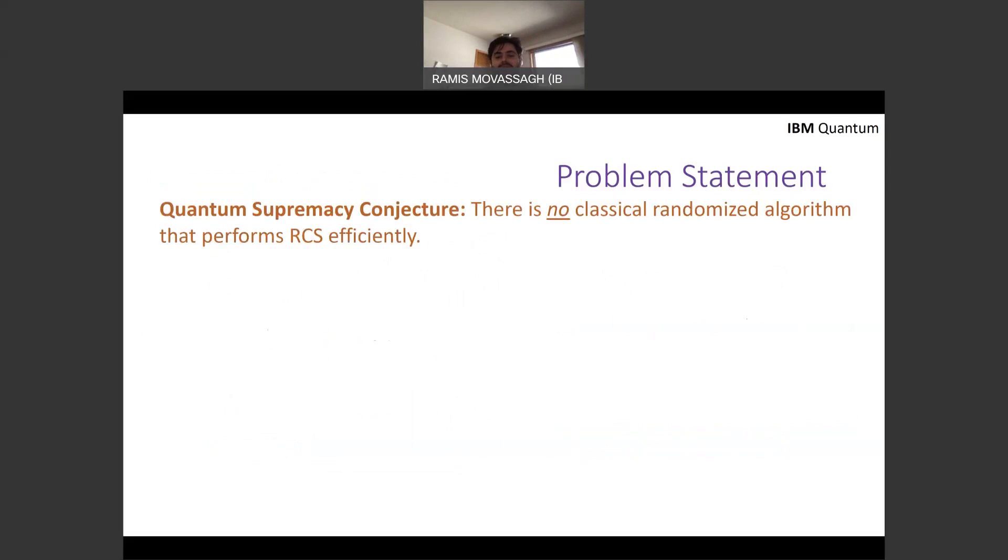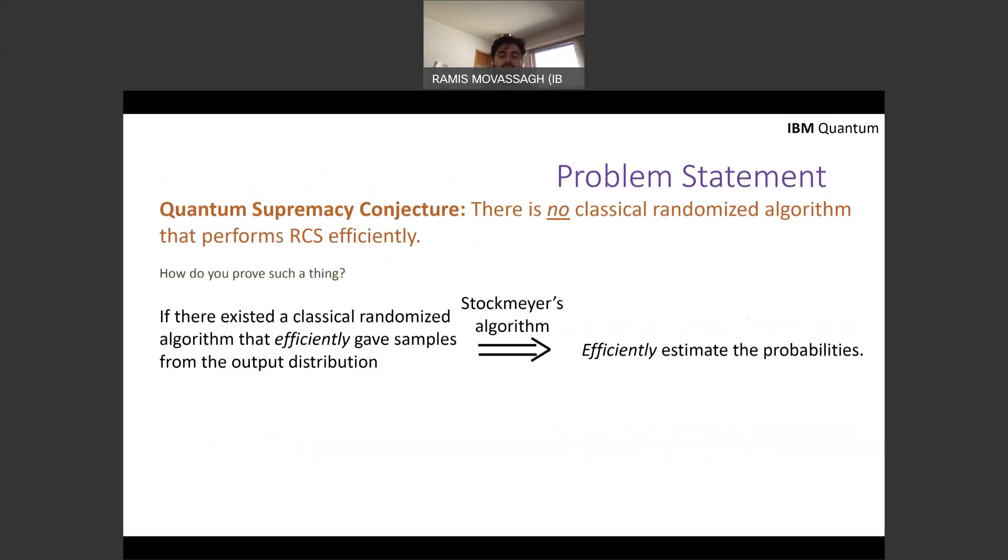So the supremacy conjecture says there is no classical randomized algorithm that can perform random circuit sampling efficiently. But how do you prove such a thing? Well, there is a celebrated Stockmeyer algorithm that says if there exists a classical randomized algorithm that efficiently gave samples from the output distribution, then you could efficiently estimate the probabilities. Here efficiently means in polynomial time and estimating is something very particular that I'll talk about in the next slide.